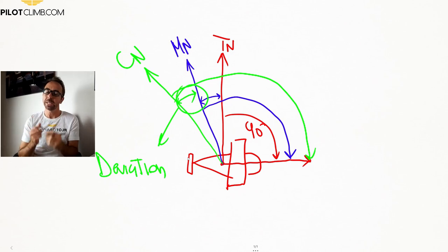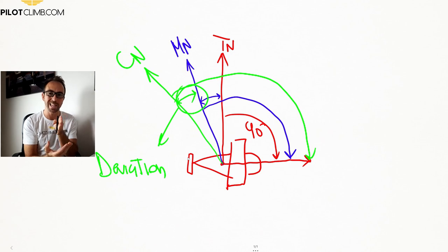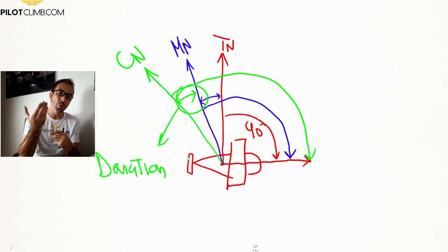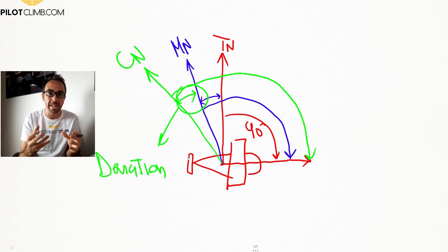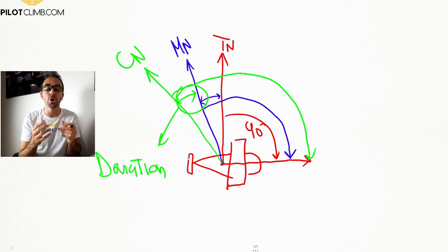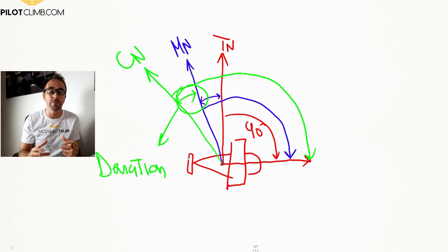Why does deviation exist? If you take a compass onto a field with no other magnetic field, it will point to magnetic north. However, if you place that same compass inside an aircraft, the reading will shift slightly — because every aircraft has its own magnetic field, and that field introduces an error on the compass. The compass will point to a north close to, but not exactly, magnetic north.